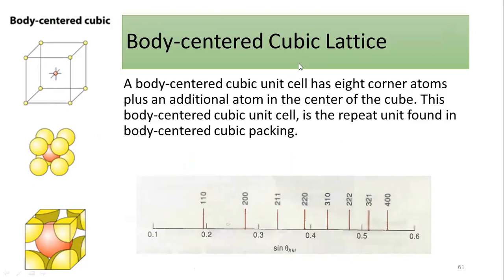Our main focus here is to understand how to calculate the interplanar separation of a body-centered cubic lattice. The BCC lattice has eight corners, one through eight, similar to the simple cubic system, but with an additional atom at the center of the cube — that's why it is called the body-centered cubic system. This is the XRD pattern showing sine theta values and the corresponding HKL values.